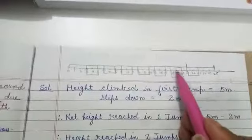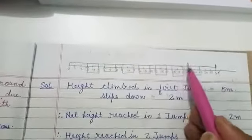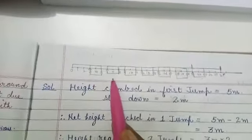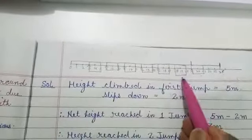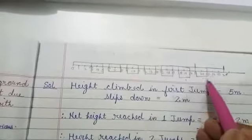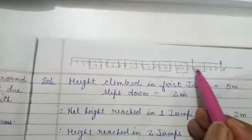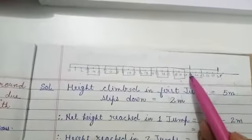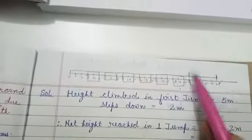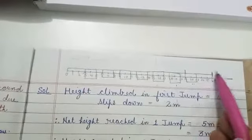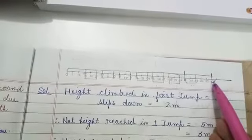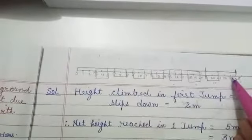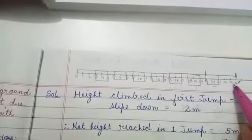This process goes on. And after 7 jumps he was at the point 21. You can see 1st jump, 2nd jump, 3rd jump, 4th jump, 5th jump, 6th jump, 7th jump. After the 7th jump he is at the height 21 feet. After 21 feet he will jump again 5 feet, so he will reach at 26 feet. But the height of the pipe is just 25 meters. So clearly at the 8th jump he will be on the top of the pipe.